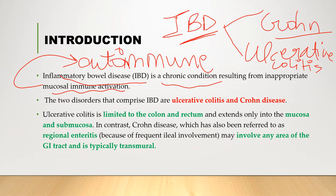Ulcerative colitis is actually only limited to the colon and rectum, and it involves only two layers of the GIT — the mucosa and the submucosa.